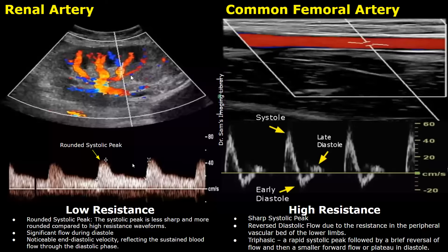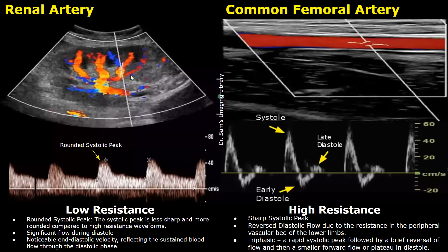The waveform on the left is a low resistance waveform of a renal artery. Low resistance waveforms will have rounded systolic peaks — this systolic peak is a blunted, rounded peak. This rounded peak is a feature of low resistance waveform. There is also significant flow during the diastolic phase, which is another feature of a low resistance waveform.